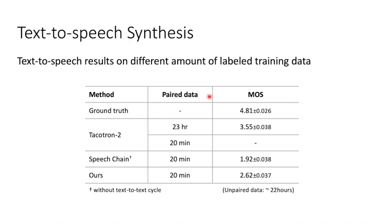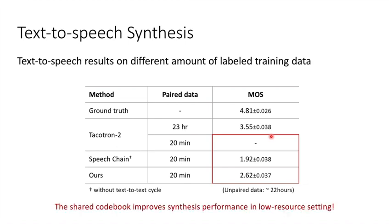In the table, we show the model's MOS on different amount of the label data. The higher the MOS, the higher the speech quality of the model output. The ground truth audio gives a very high MOS, which can be seen as an upper bound. With only 20-minute label data available, our model outperforms other models. The Tacotron 2 model can hardly generate intelligible speech in this setting. This indicates the shared representation of the speech recognition can also improve the speech synthesis.